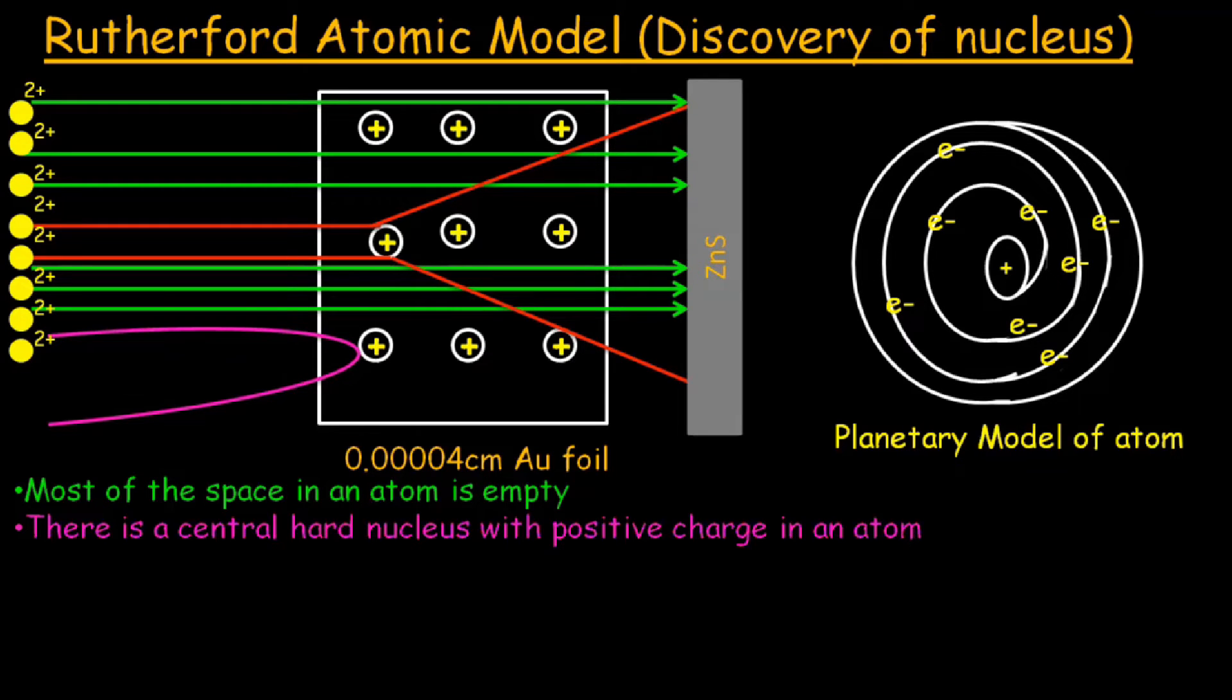There is a central hard nucleus with positive charge in an atom. As helium nuclei are positively charged, they hit the positively charged center and bounce back. As very few particles bounce back, this suggests that there is a hard center inside an atom which has a positive charge and which is very small in size.